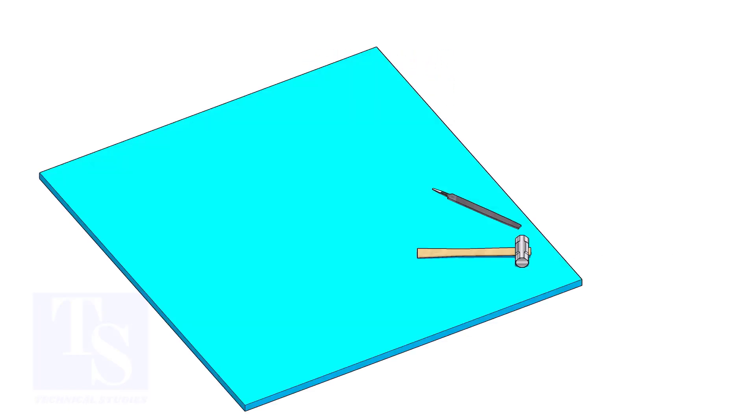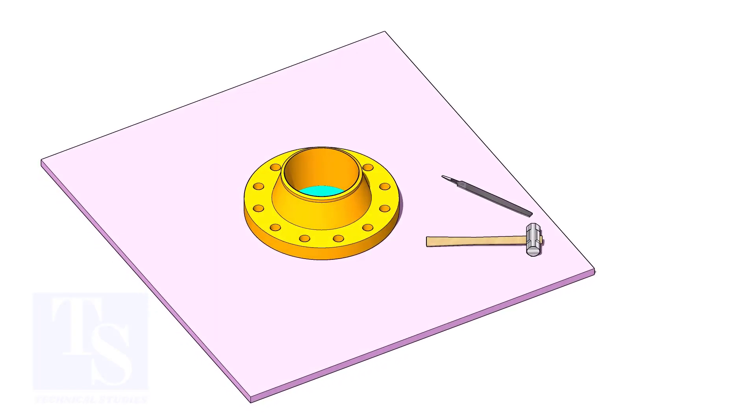The flange face may get damaged during fabrication. Use a non-metallic sheet like a teflon sheet, thin hardboard, or piece of CNAF gasket sheet, as shown in the video. Use small wedges to level the flange.